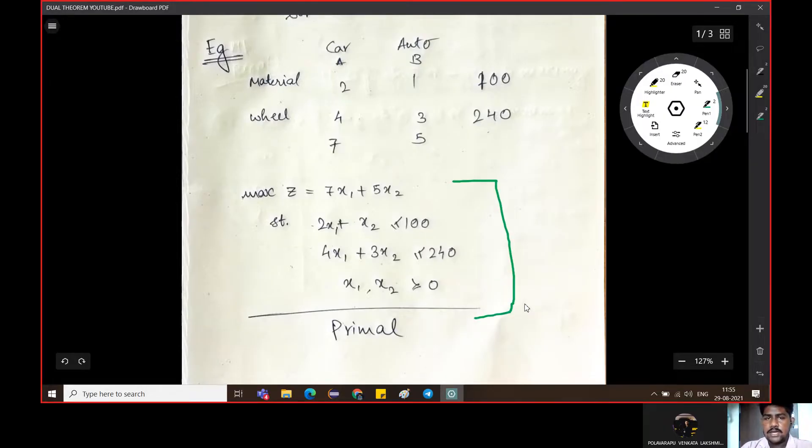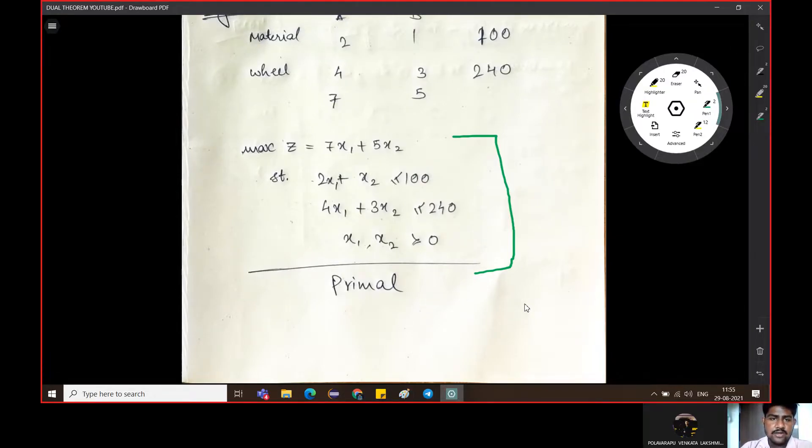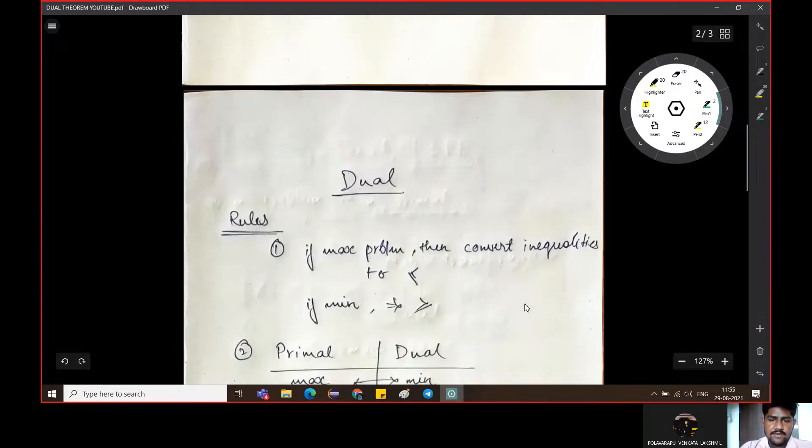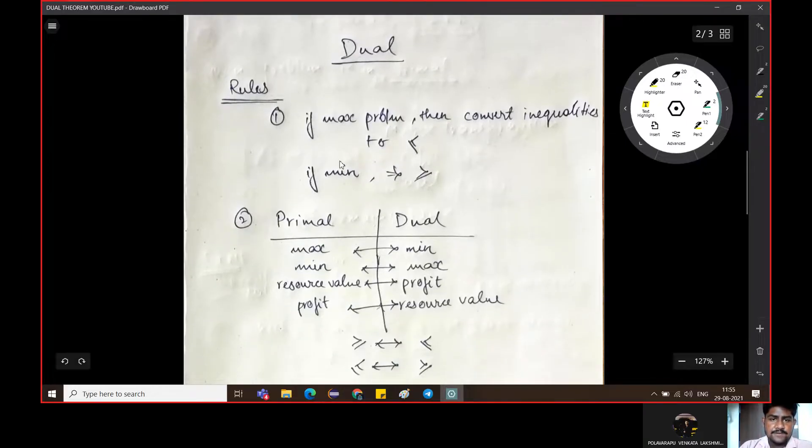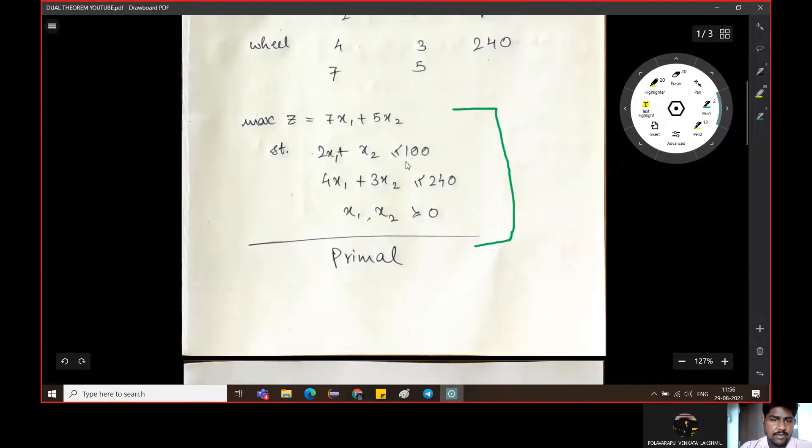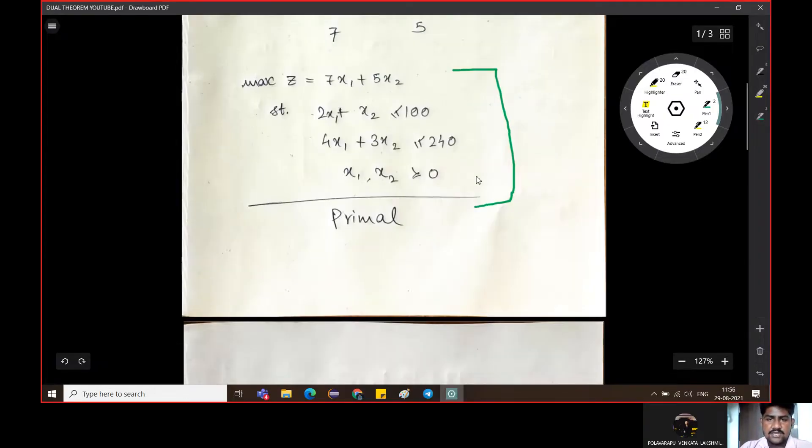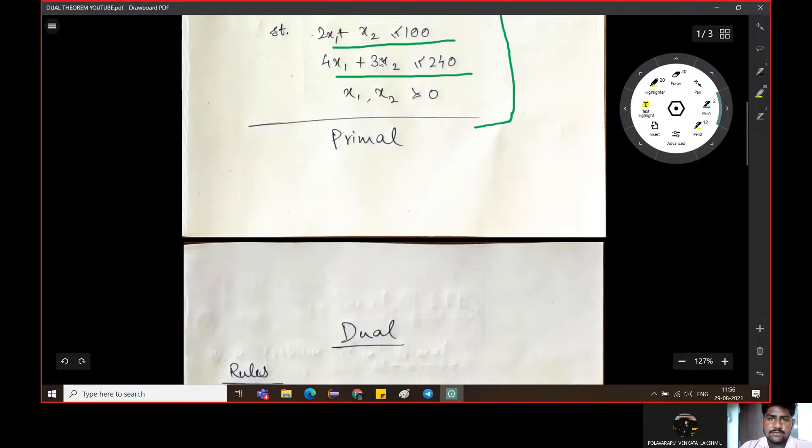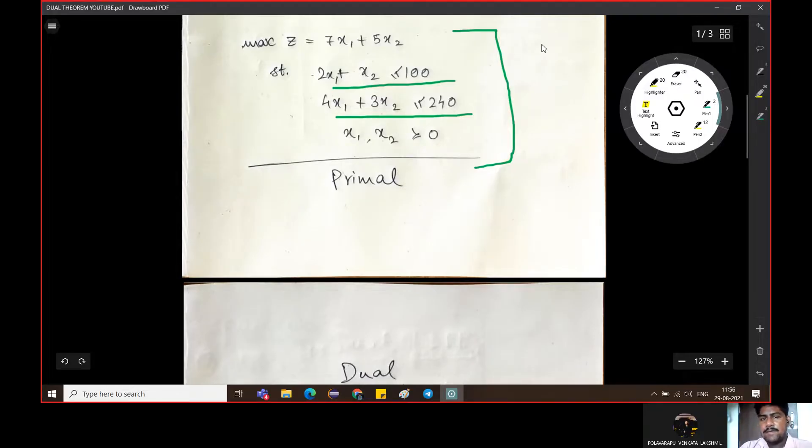We have given equations we assume primal and we will convert. How do we convert? If maximization problem then convert the inequality. Suppose the problem is to maximize, the constraint and the inequality should be less than equal to. Suppose one problem is to maximize, the constraint is less than equal to, you will write that in this way.